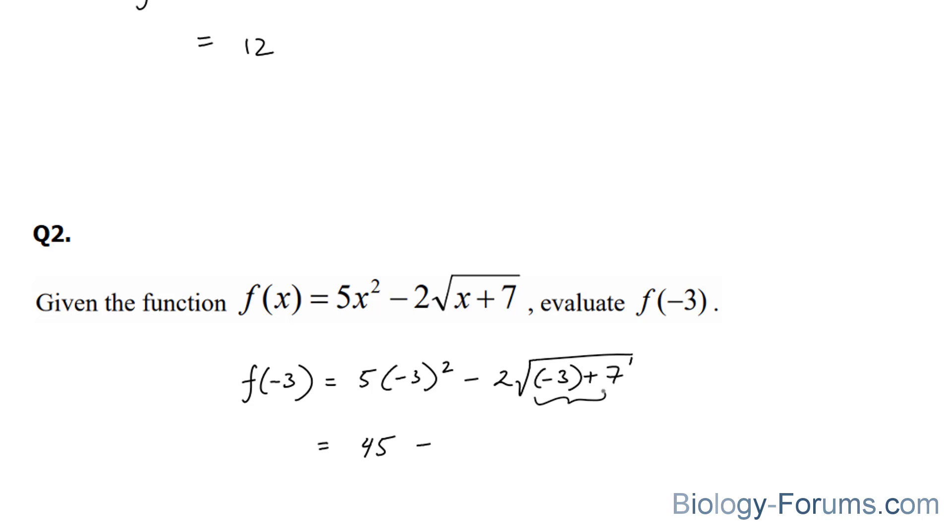Over here, we have -3 + 7, which equals 4. So we have 2 times the square root of 4, which is 45 - 2 times 2, giving us an answer of 41.